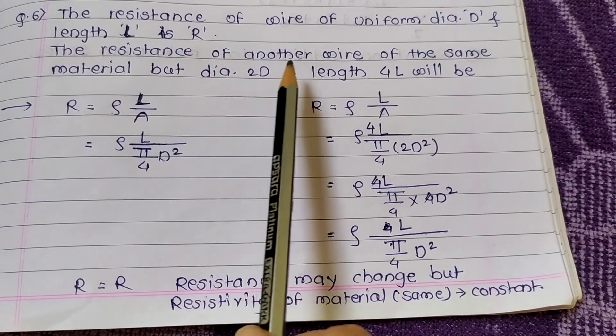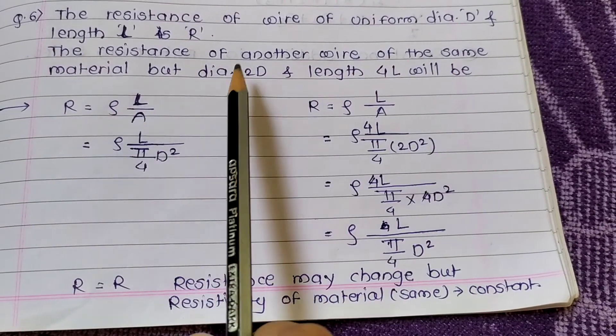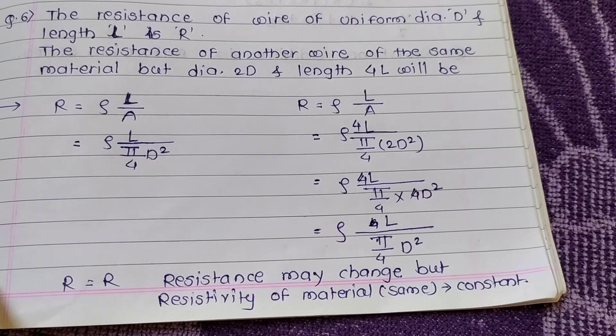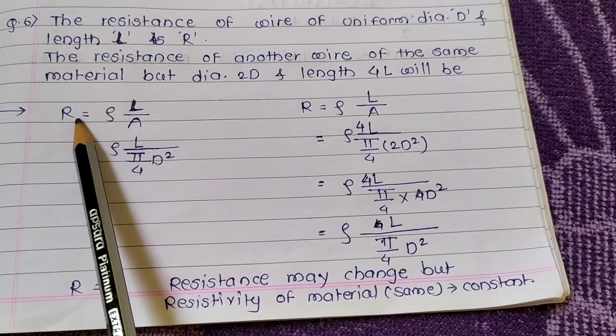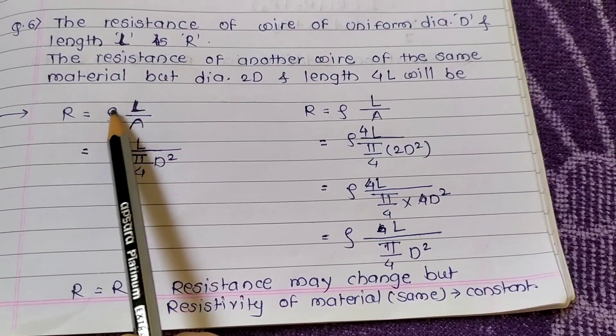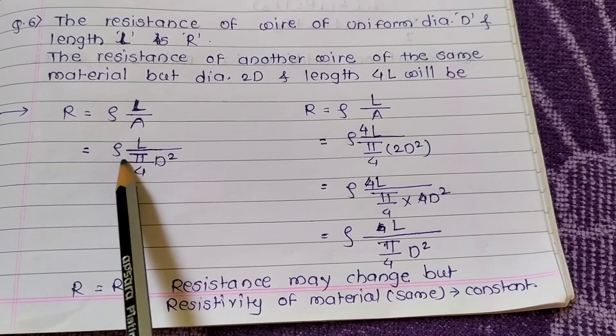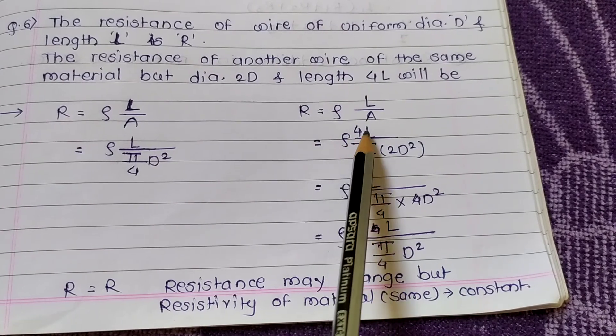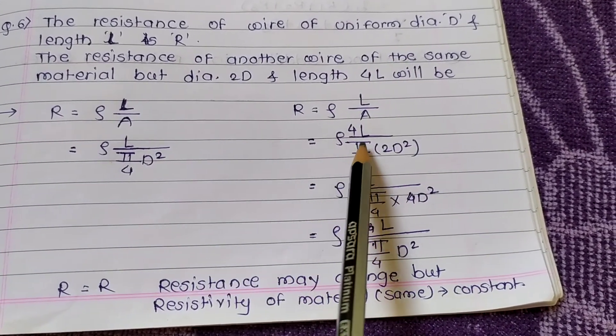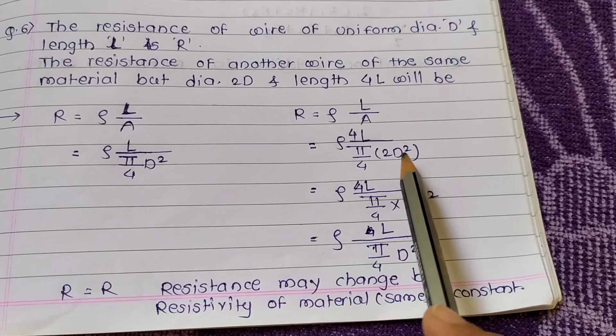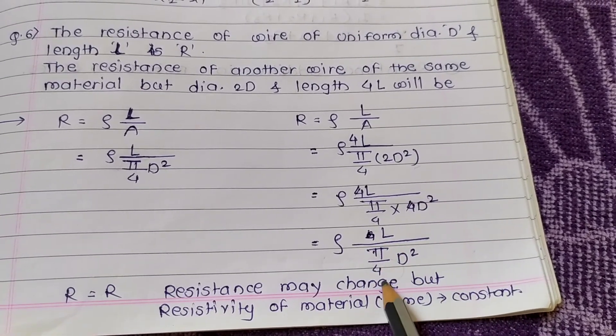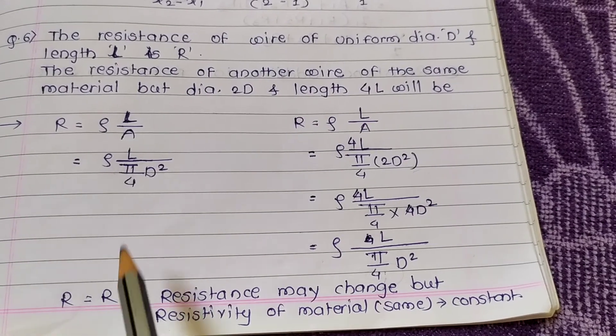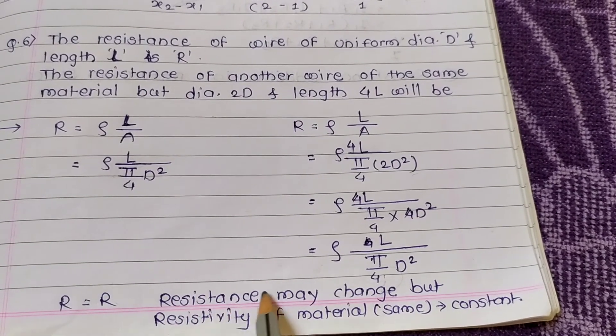The resistance of a wire of uniform diameter D and length L is R. Then resistance of another wire of same material but diameter 2D and length 4L will be? Resistance R = ρL/A = ρL/(π/4 × D²). For 4L and diameter 2D, after calculating we get R, same. Resistance may change but resistivity of a material is the same.